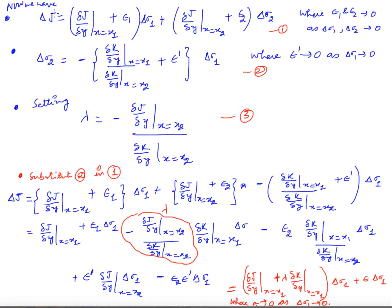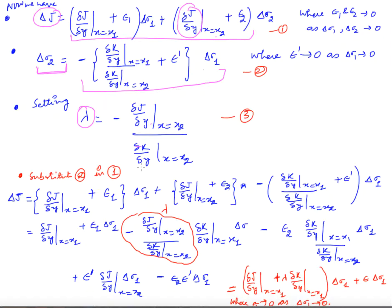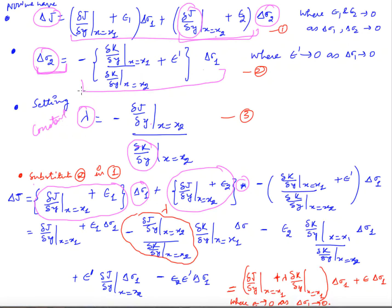Now I have δJ in its original form and I have δσ₂ expressed in terms of δσ₁. I choose λ = (variational derivative of J w.r.t. y at x₂) / (variational derivative of k w.r.t. y at x₂). Substituting the value of δσ₂ into the expression for δJ, I get the first term as (δJ/δy at x₁) times δσ₁, plus the second term with δσ₂ replaced by its expression in δσ₁, through some algebraic manipulations.